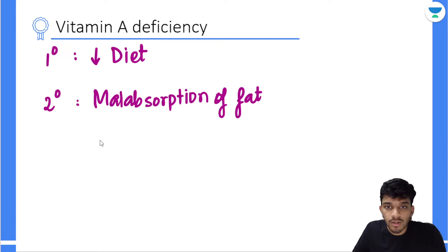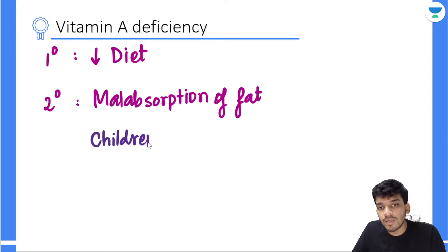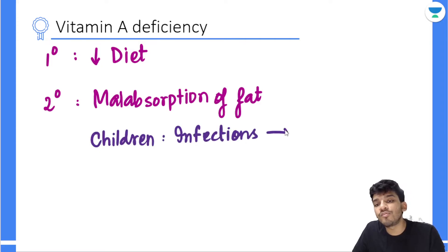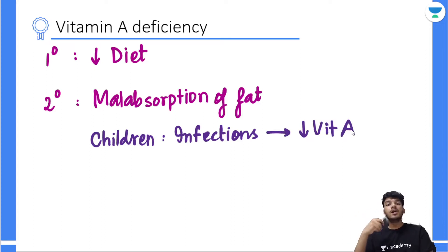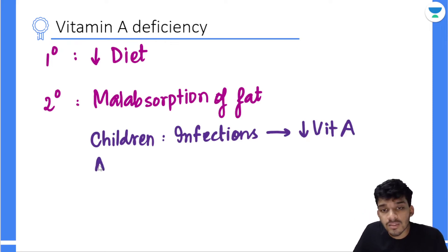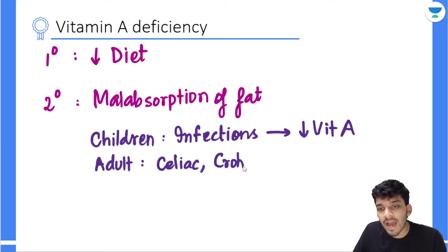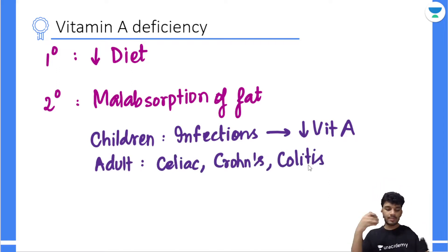In children, infections reduce the amount of Vitamin A available to the body, because during the acute phase response, retinol binding proteins cannot be synthesized by the liver — the liver is busy synthesizing acute phase proteins. In adults, causes include celiac disease, Crohn's disease, and other forms of colitis — these are malabsorption disorders that lead to Vitamin A deficiency.